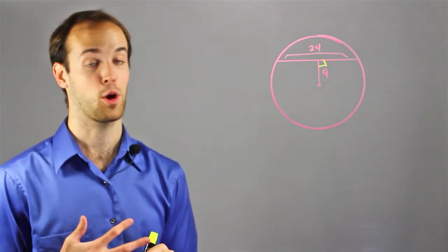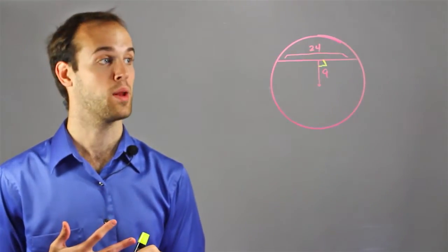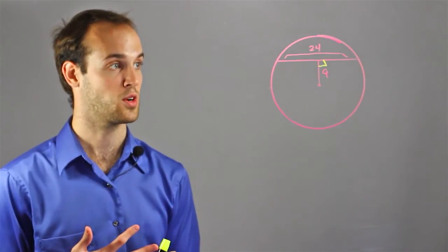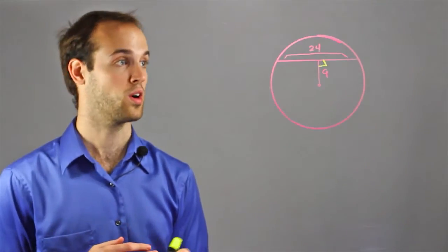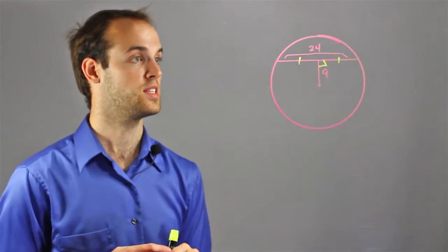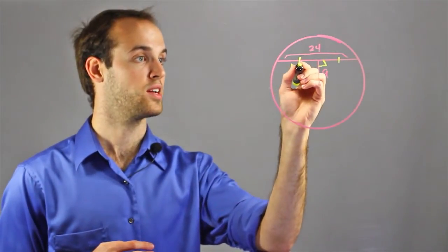And now, since I know that it's a perpendicular line, I know that it must be the perpendicular bisector because it goes through the center of the circle and it's perpendicular to the chord, which means that this side is equal to this side, which puts this length right here at 12.